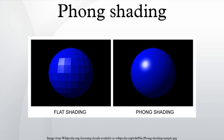Phong shading refers to an interpolation technique for surface shading in 3D computer graphics. It is also called Phong Interpolation or Normal Vector Interpolation Shading. Specifically, it interpolates surface normals across rasterized polygons and computes pixel colors based on the interpolated normals and a reflection model. Phong shading may also refer to the specific combination of Phong interpolation and the Phong Reflection Model.